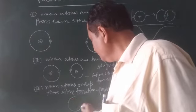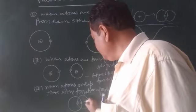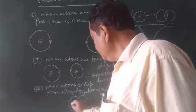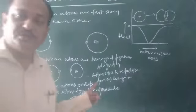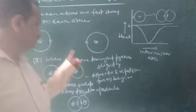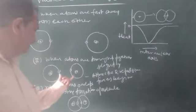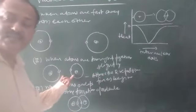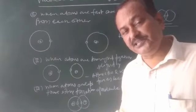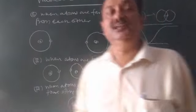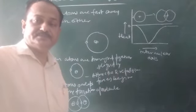This is VBT. In the first condition, atoms are far away, no interaction, no molecule. In the second condition, attractive forces begin. In the third condition, they overlap each other and there is the formation of a stable molecule. This is all about Valence Bond Theory.